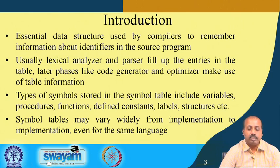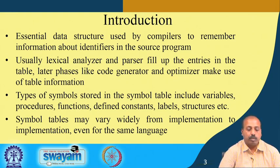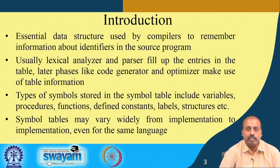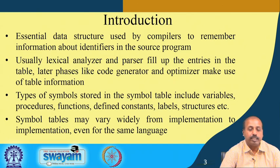The symbol table is an essential data structure used by compilers to remember information about the source identifiers in the source program. Identifiers may be types, type names, variables, or function names. The lexical analyzer and parser fill up the entries in the table, and the later phases like code generator and optimizer make use of those symbol table entries.